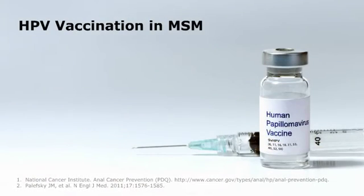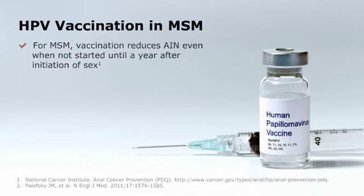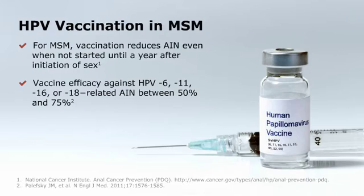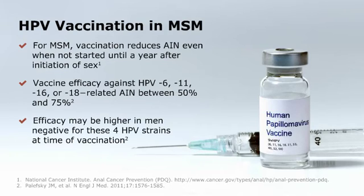According to a report by the National Cancer Institute, HPV vaccination of men who have sex with men, or MSM, aged 16 to 26 years, reduces anal intraepithelial neoplasia, or AIN, a precursor lesion of anal cancer. HPV types 16 and 18 are responsible for most HPV-related cancers. Vaccine efficacy against HPV 6, 11, 16, or 18 related AIN is 50 to 75%, and may be highest in those who are negative for these four HPV strains at the time of vaccination.